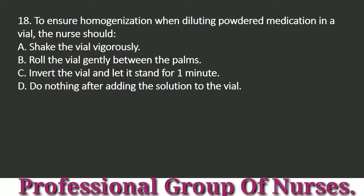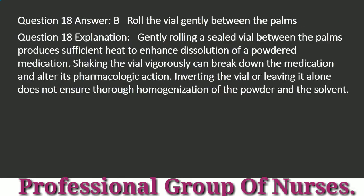Question 18: To ensure homogenization when diluting powdered medication in a vial, the nurse should: a. Shake the vial vigorously. b. Roll the vial gently between the palms. c. Invert the vial and let it stand for one minute. d. Do nothing after adding the solution to the vial. Answer: b. Roll the vial gently between the palms. Explanation: Gently rolling a sealed vial between the palms produces sufficient heat to enhance dissolution of a powdered medication. Shaking the vial vigorously can break down the medication and alter its pharmacologic action. Inverting the vial or leaving it alone does not ensure thorough homogenization.